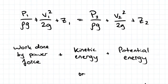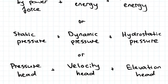Bernoulli's equation can be thought of in a few different ways. Looking at the three terms, we've got p over rho g, v squared over 2g, and z. Each can be represented differently. The first term is work done by the pressure force, the second term is kinetic energy because it involves velocity, and the height gives the potential energy. In terms of pressure, we have static pressure, dynamic pressure, and hydrostatic pressure. Then there's pressure head, velocity head, and elevation head. Essentially, the Bernoulli equation is a conservation of energy equation.